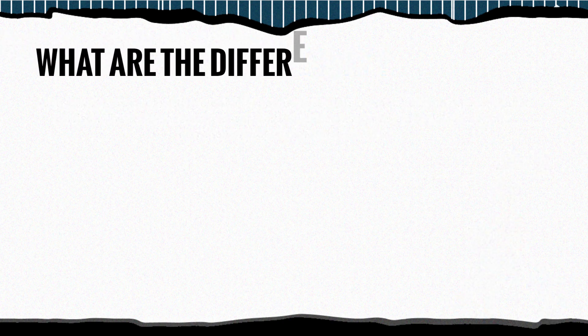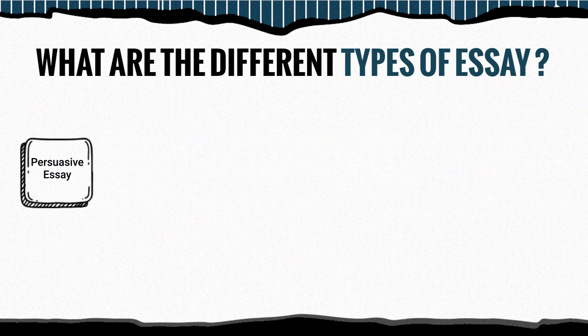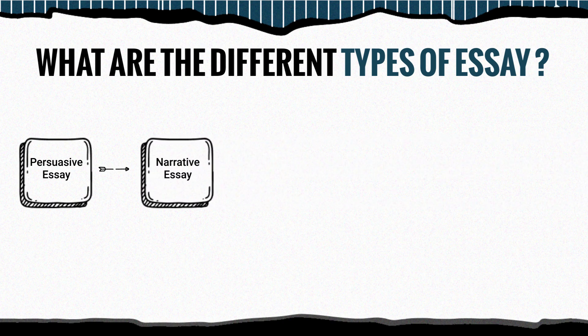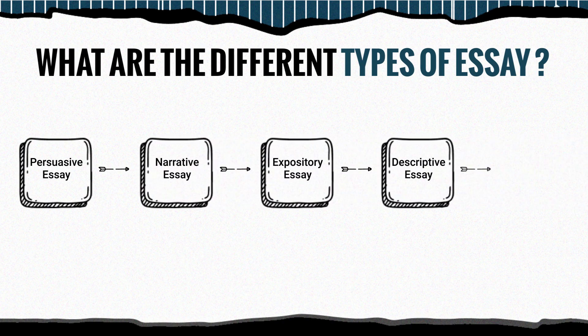When it comes to essay writing, there are five primary types. Each has its purpose, structure, and requirements: persuasive essay, narrative essay, expository essay, descriptive essay, and argumentative essay.